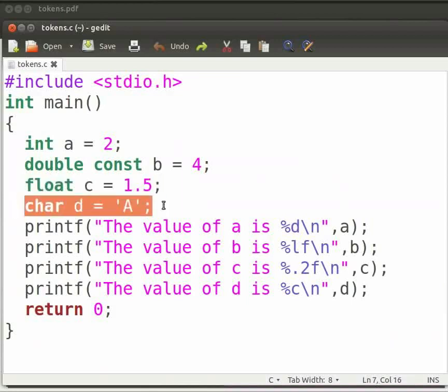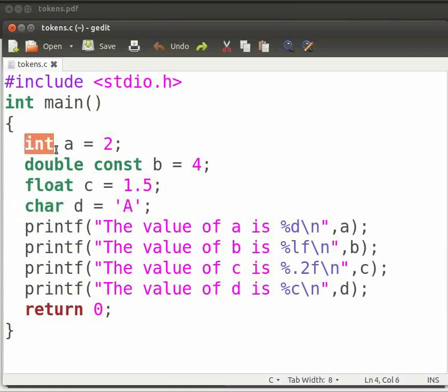Here, d is a variable. Char and single quotes suggest that we are dealing with a character. As a result, d is a character variable storing the value a. It is easy to see that int, double, float and char are data types.